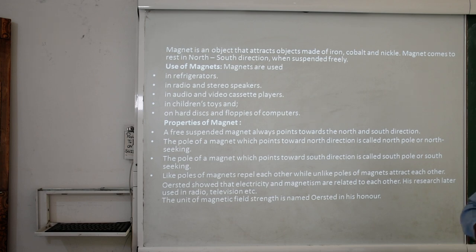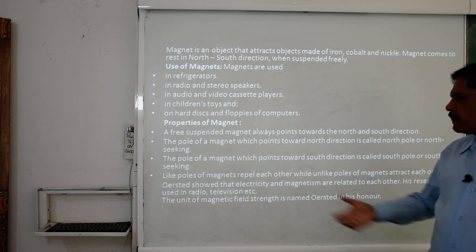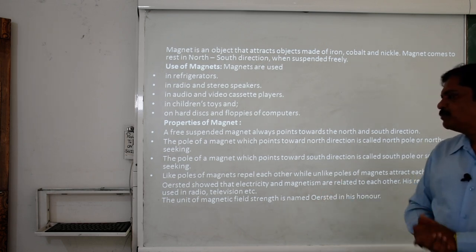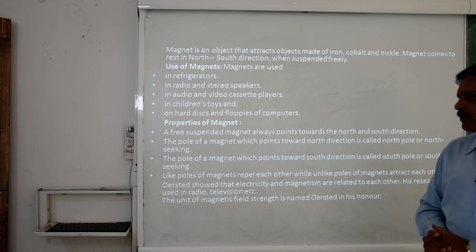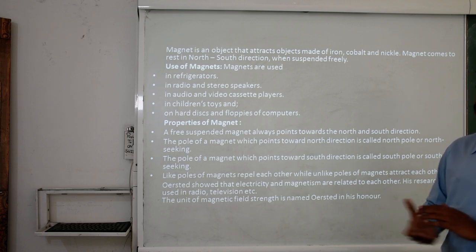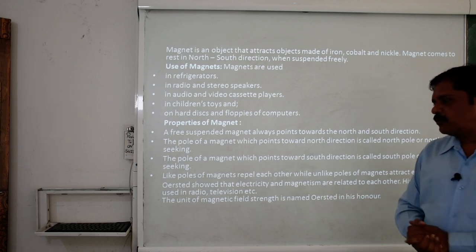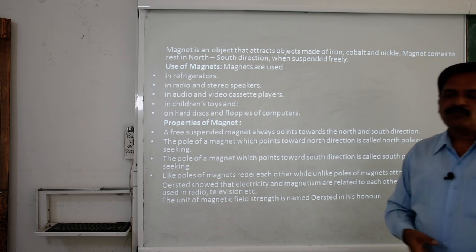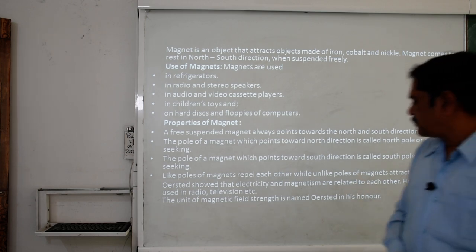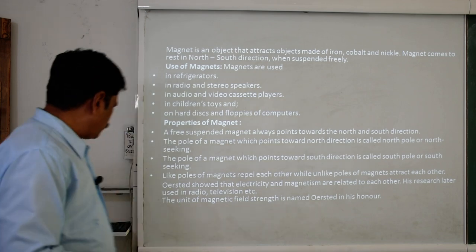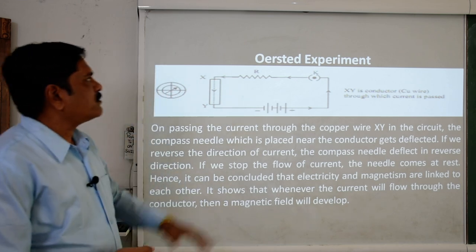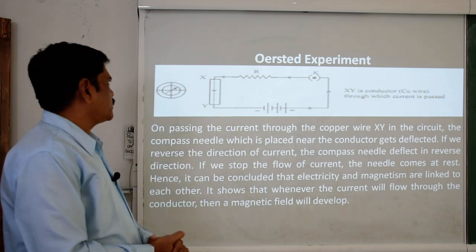There is a scientist — Oersted — who showed that electricity and magnetism are related to each other, and his research was later used in radio, television, and other things. The unit of magnetic field strength is named after Oersted, called the Oersted unit. He was basically responsible for establishing a relationship between magnetism and electricity. Here we are trying to learn this fact — the diagram is given about the experiment performed by Oersted.